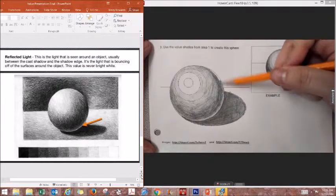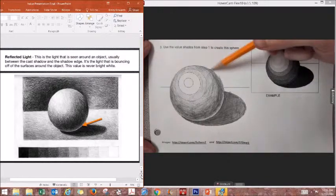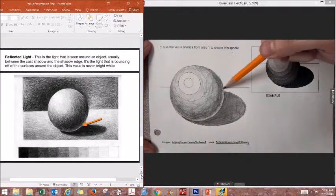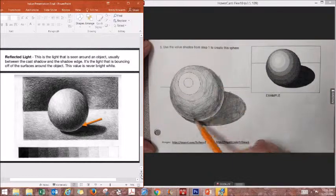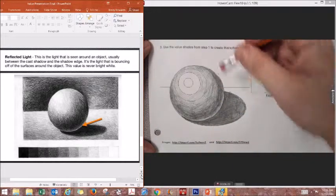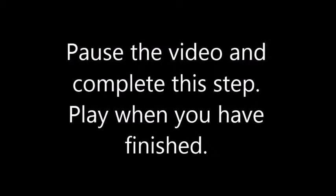But as the object curves up into the top of the sphere, I am going to still keep it darker up there because the reflected light should only be down at that table surface, not above the cast shadow itself. When you get to this point in the video, please go ahead and pause the video, and when you have completed it, push play again.